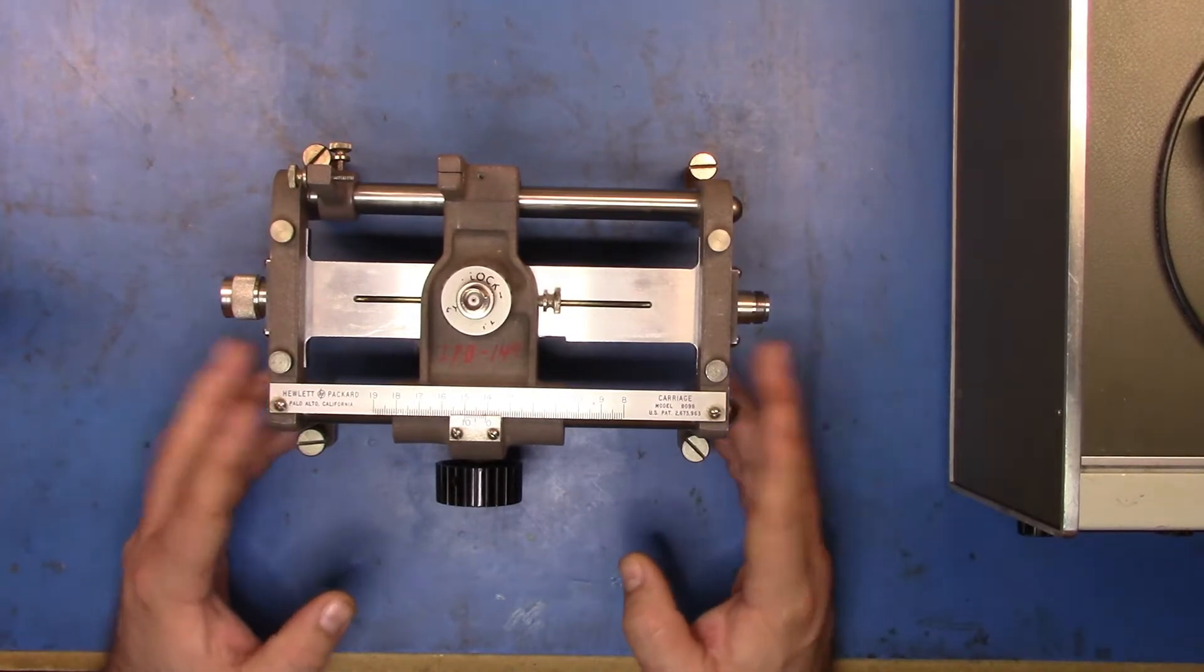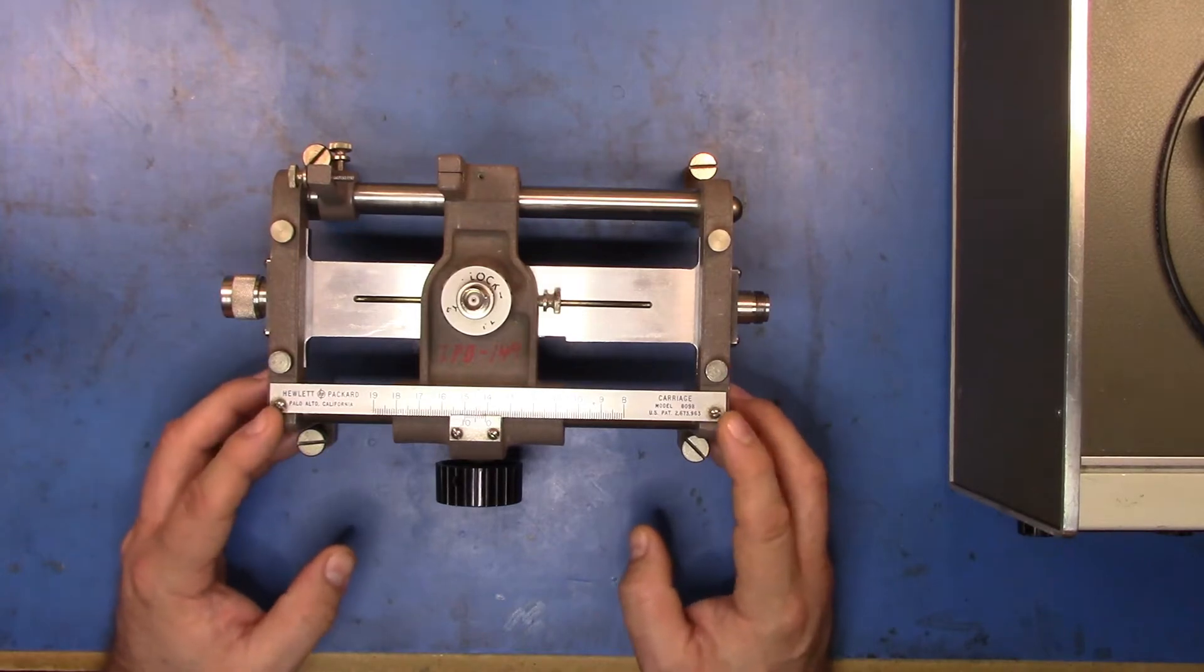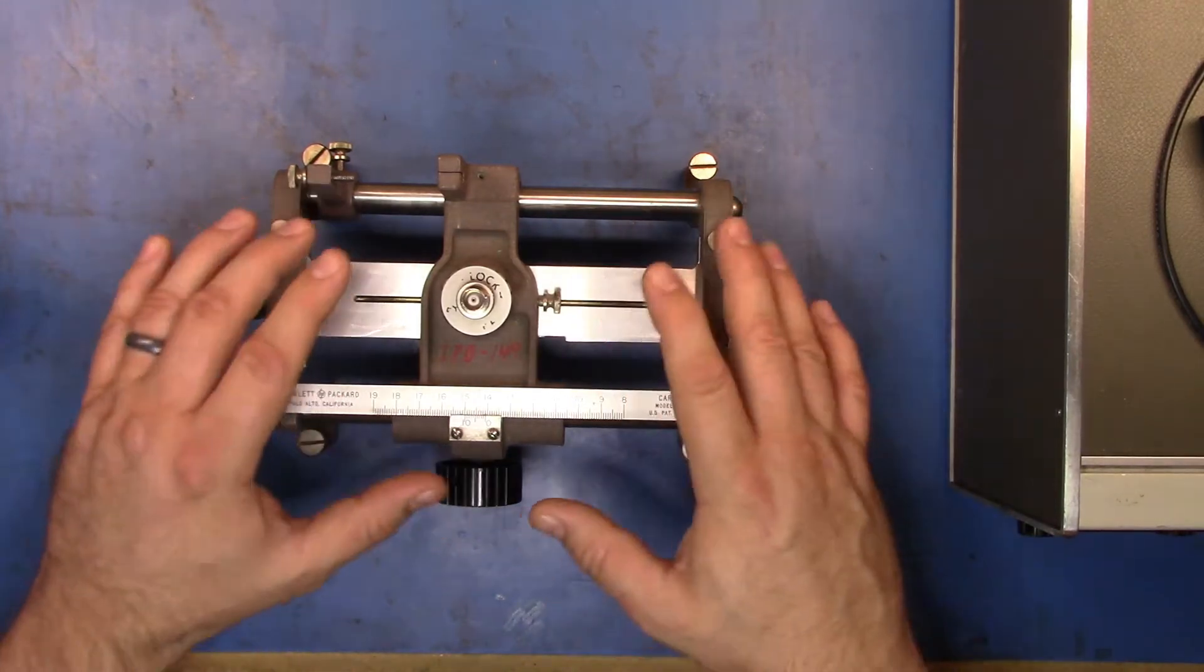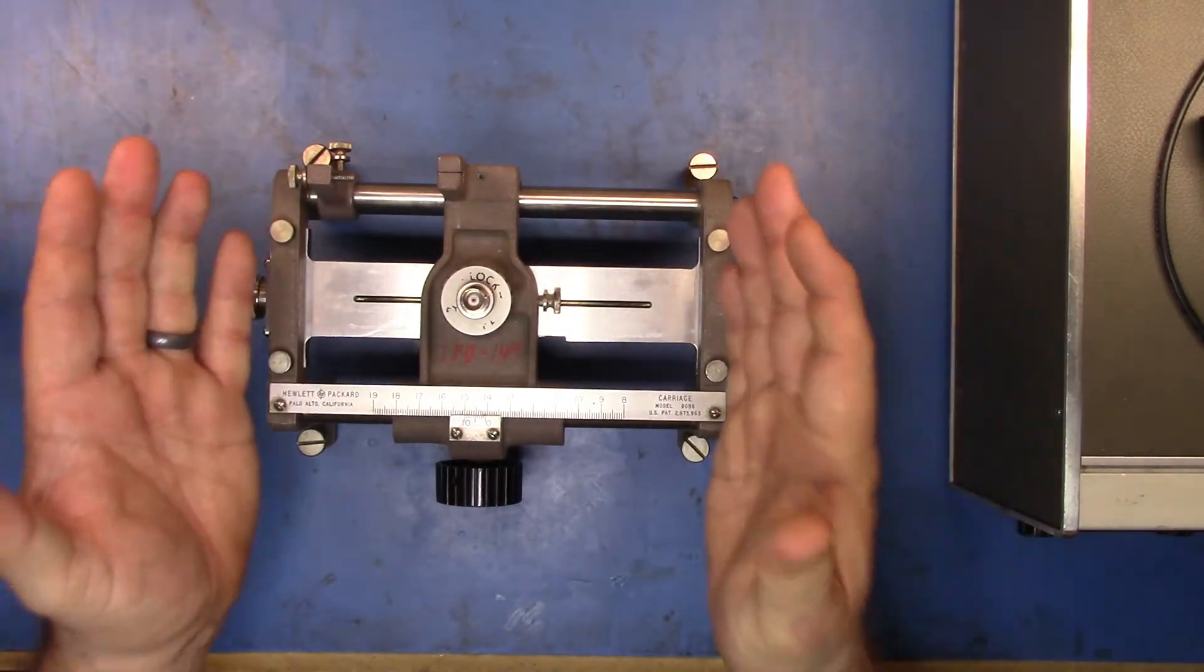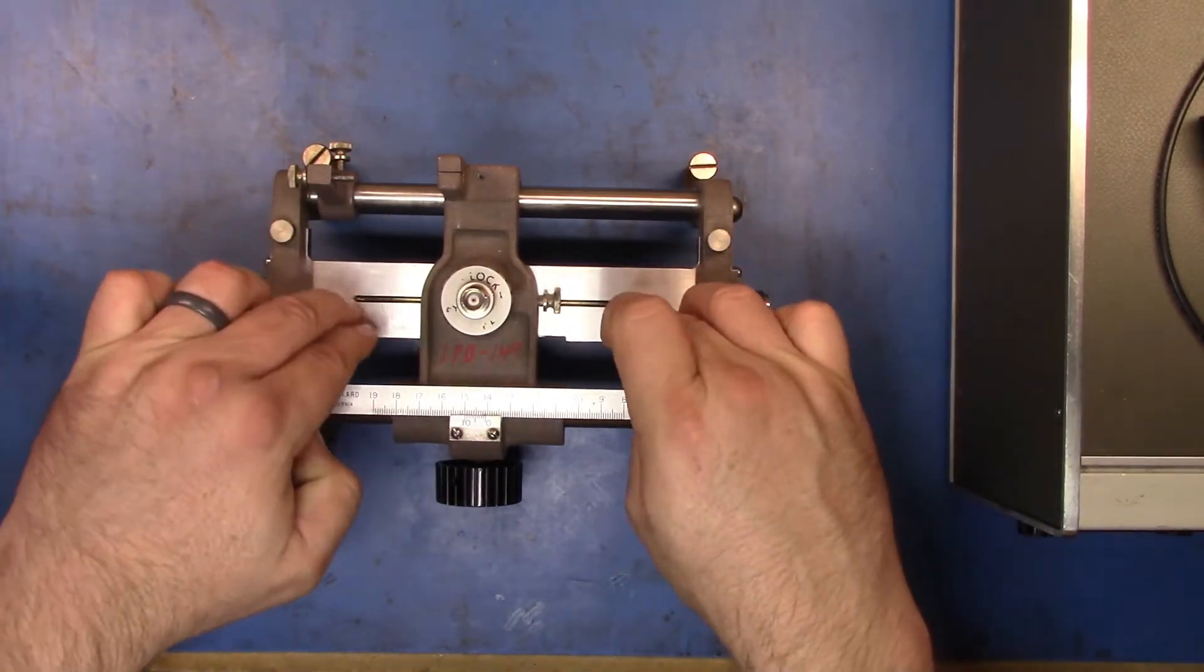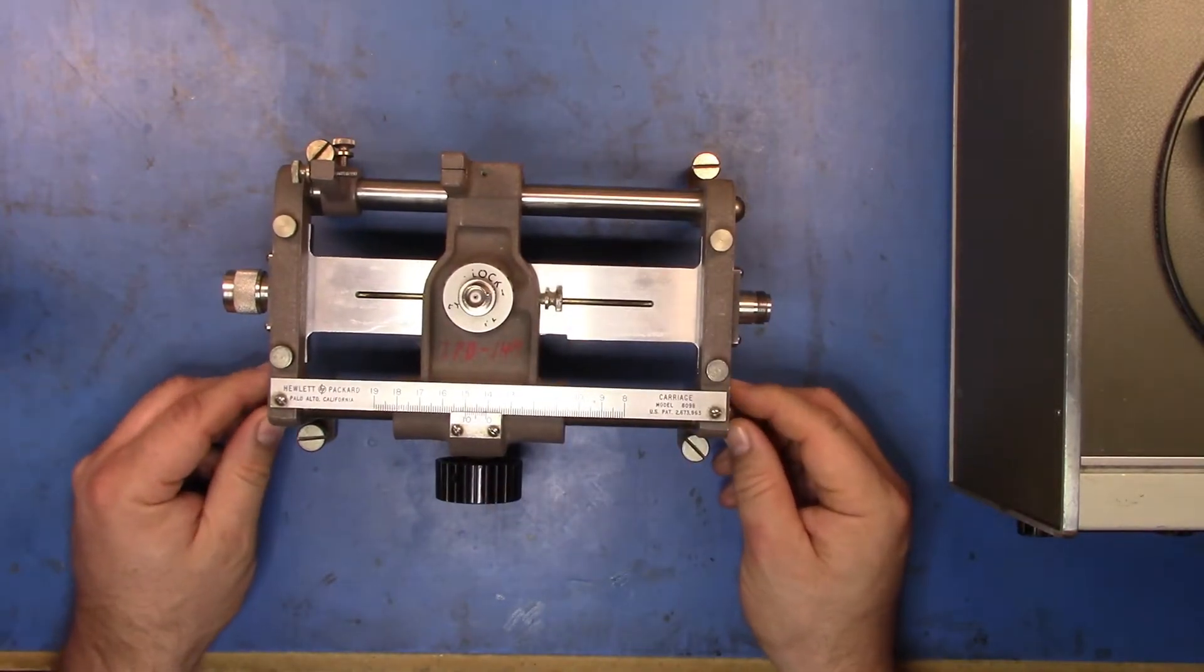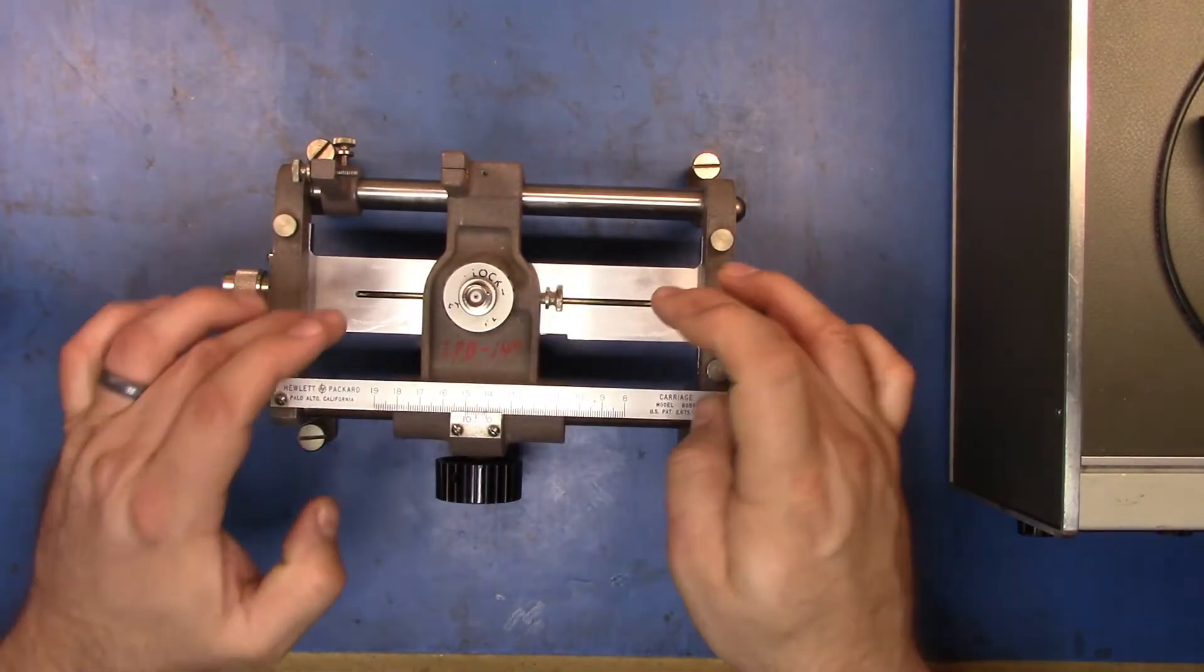The reason I bought this was that most carriages you get come in one of two cases: either they have nothing, no sensor, no slotted line, just the carriage, or you get the carriage and a slotted line but no sensor. I saw this one come up for a reasonable price and it had the sensor and the slotted line.